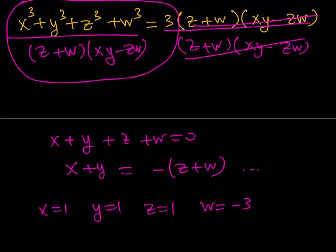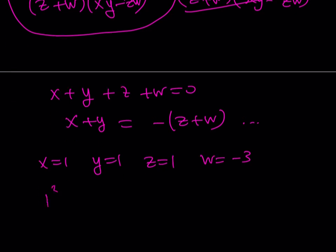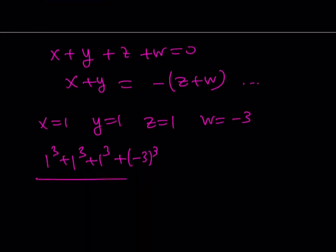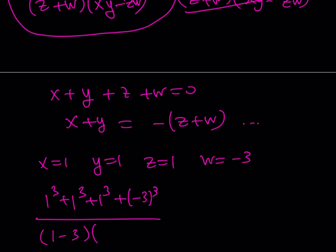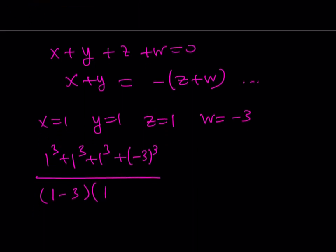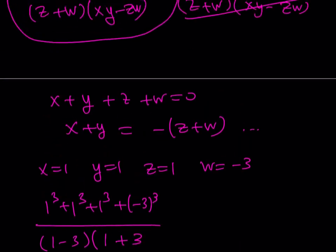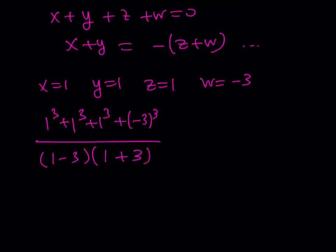Now, what I can do is take those values and substitute into the expression. So what is that going to look like? 1³ + 1³ + 1³ + (-3)³. That's going to be my numerator, divided by (z + w), which is 1 - 3, times xy - zw. xy is 1, zw is -3, but that should be a positive 3. Make sense? Because it's supposed to be xy - zw, so it's 1 - (-3), which is 1 + 3. This is like -2. This is like 4. So we get -8 at the bottom.